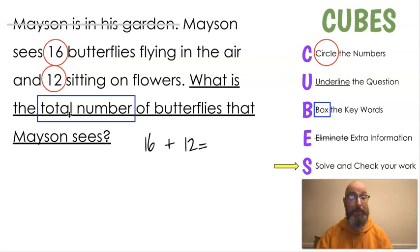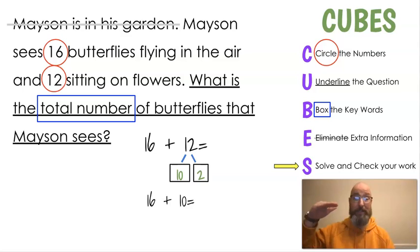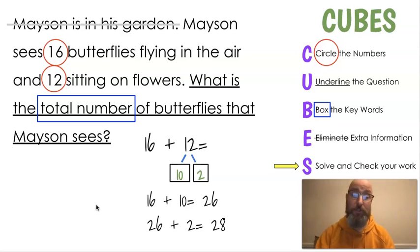For this one, I'm going to use the break apart method. I'm going to break apart that 12 into a 10 and a 2. And then I'm going to add that in steps. First, I'm going to add 16 plus 10. If I just go up 1, 16 goes to 26. And then I'm going to add the 2. I'm going to start where I left off. I left off at 26. So I'm going to add 26 plus 2. Go up 2, 27, 28. So 26 plus 2 is 28, which means 16 plus 12 is 28.